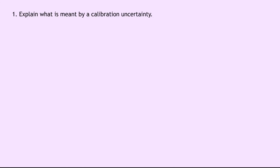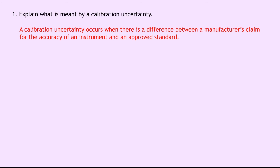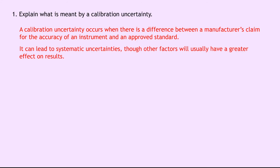Lastly, a quick example on calibration uncertainty. Question 1: explain what is meant by a calibration uncertainty. A calibration uncertainty occurs when there is a difference between a manufacturer's claim for the accuracy of an instrument and an approved standard. Manufacturers state what they think the accuracy of their instrument is, and this can lead to systematic uncertainties, though other factors — like scale reading uncertainties and random uncertainties — will usually have a greater effect on results.